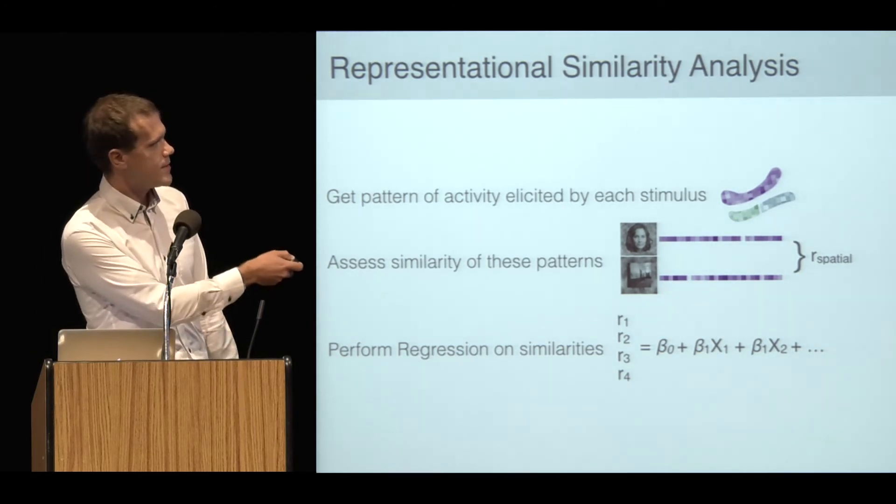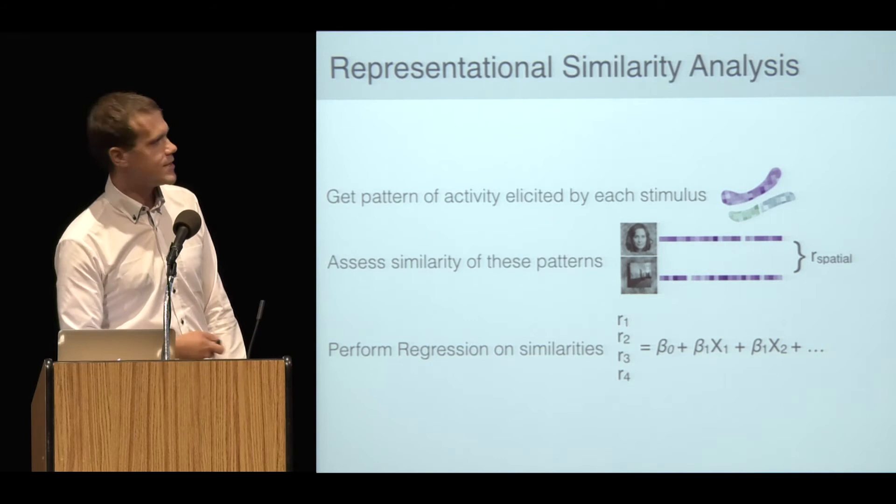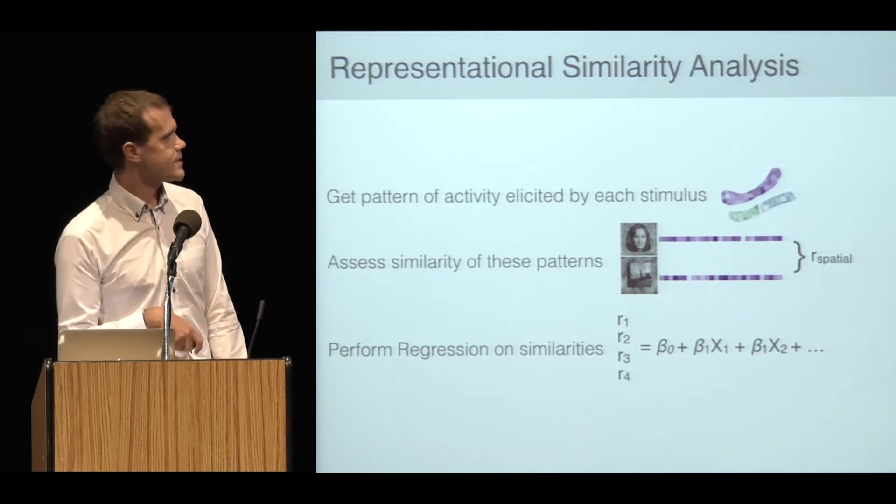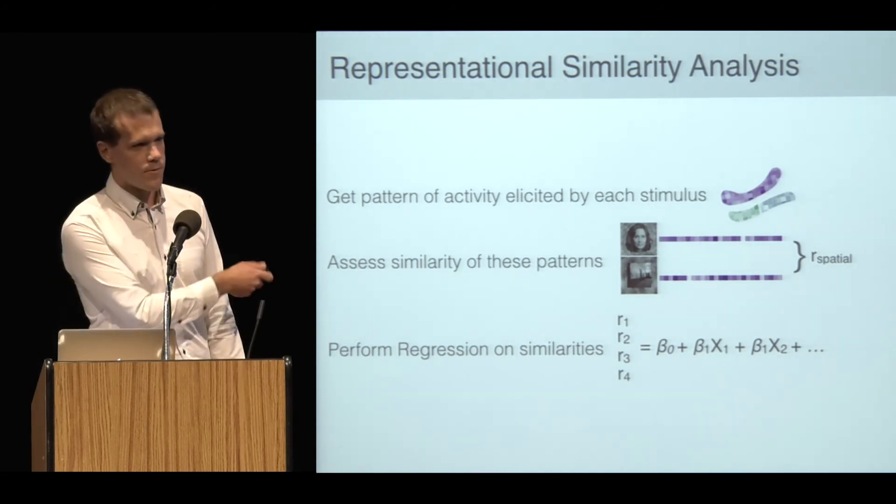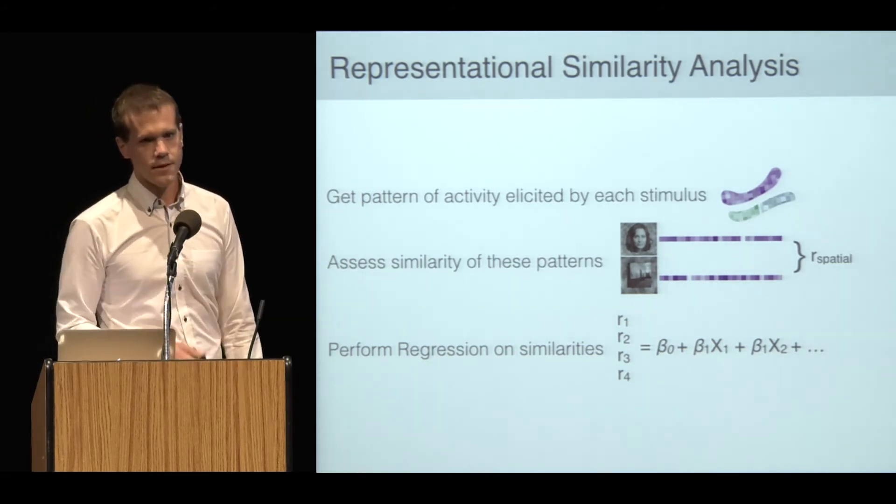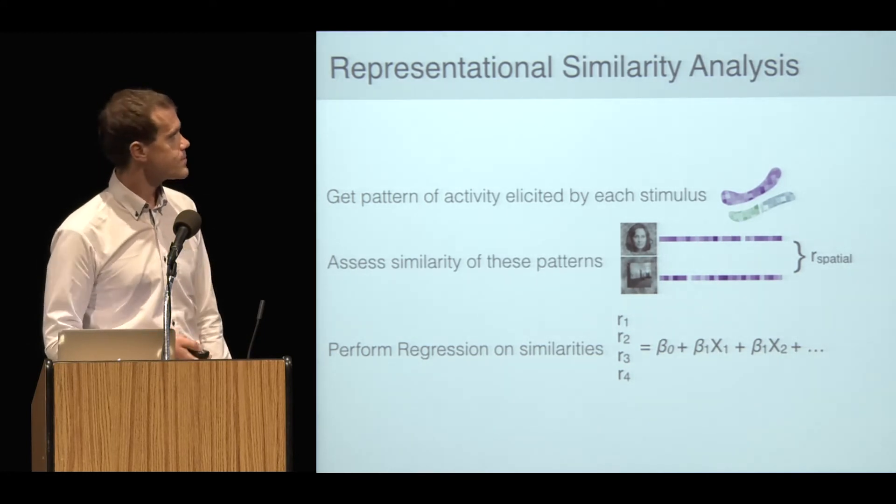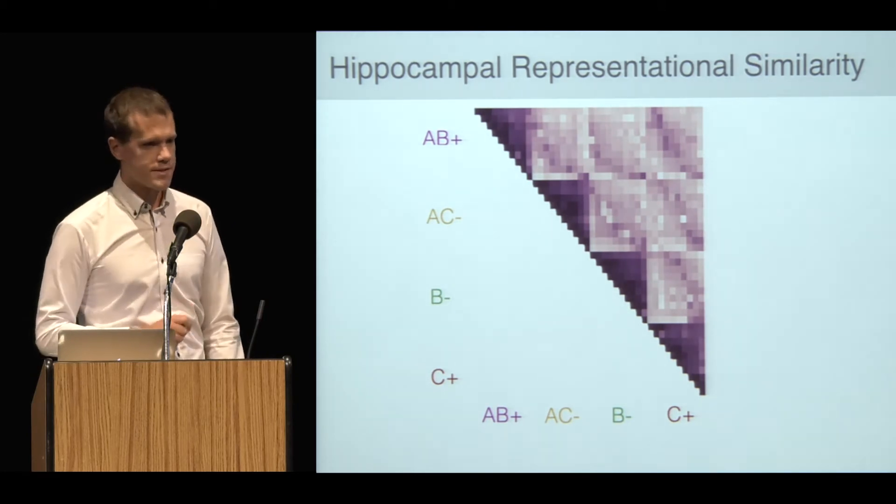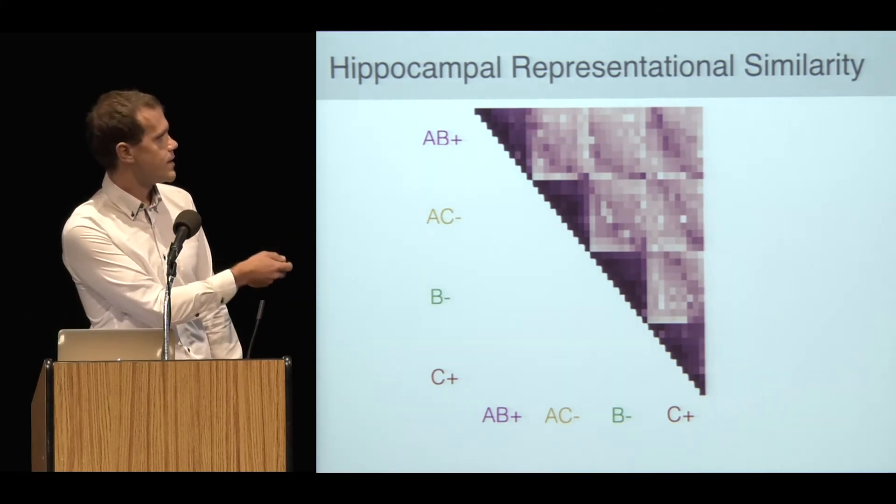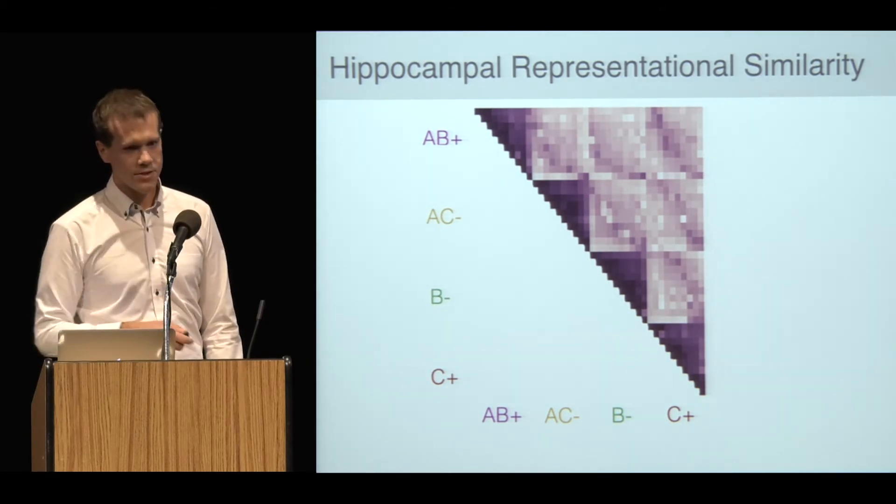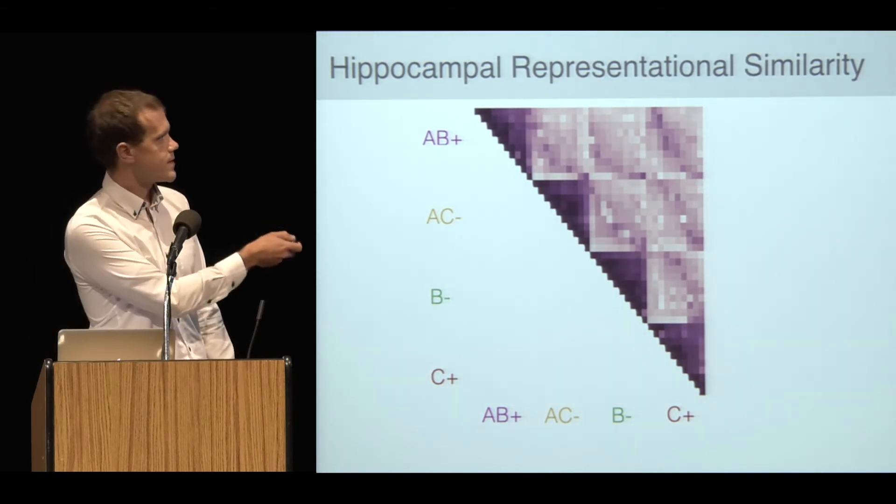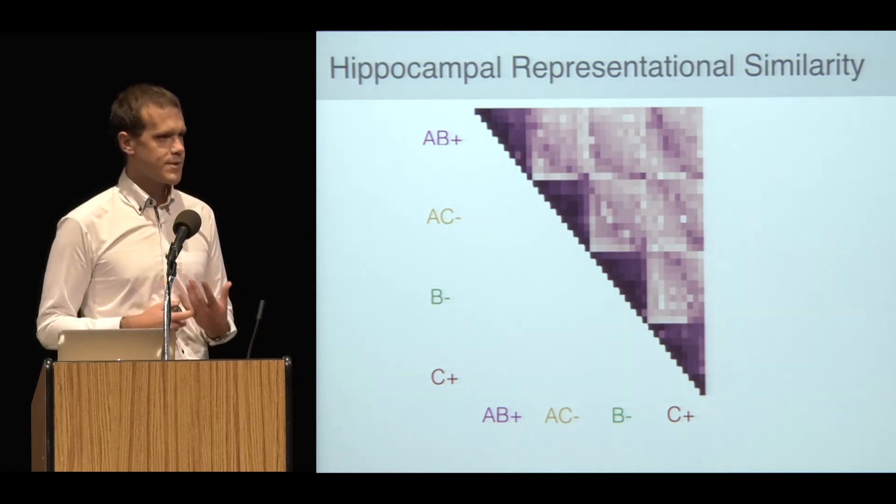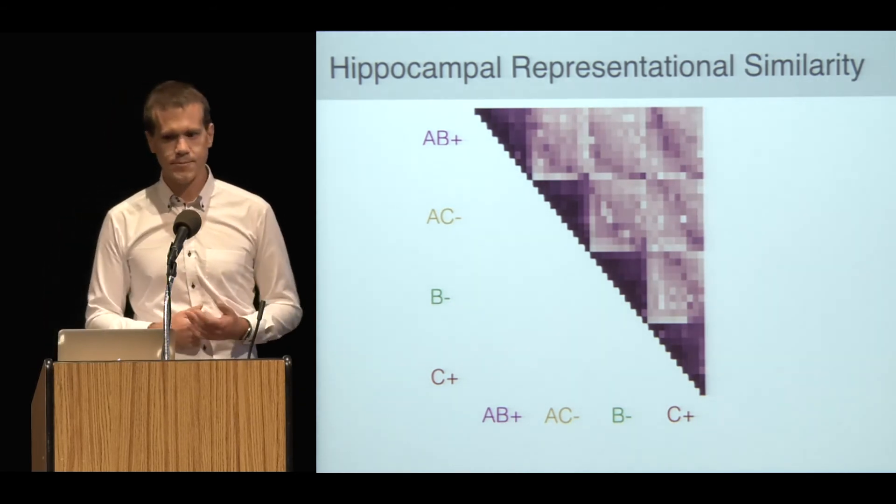I extract patterns of activity elicited by each stimulus from each ROI. I compute the pairwise correlation between these patterns for each stimulus, and then I organize them and perform regression on these similarities where the regressors are different theoretical constructs of interest. This is just the average RSA matrix in the hippocampus across all of the subjects. Coded on the left and the bottom are each of the stimulus categories, and there's 10 trials of each.